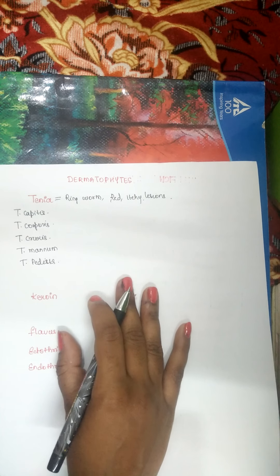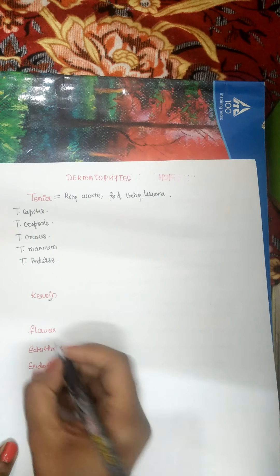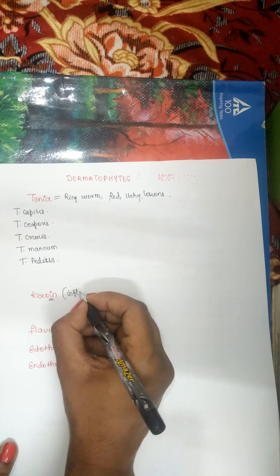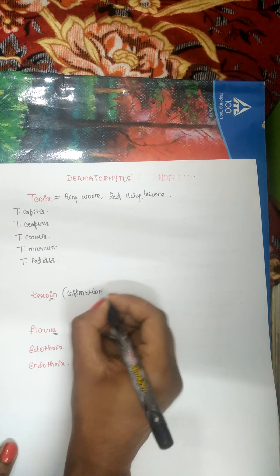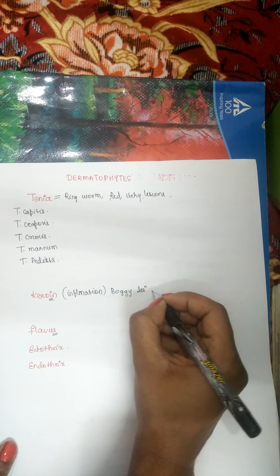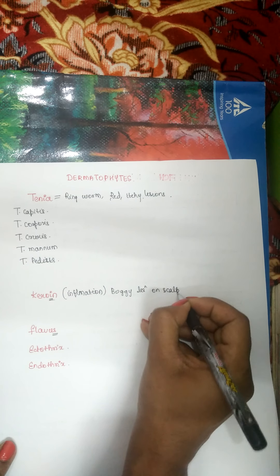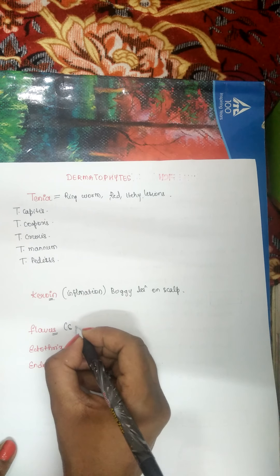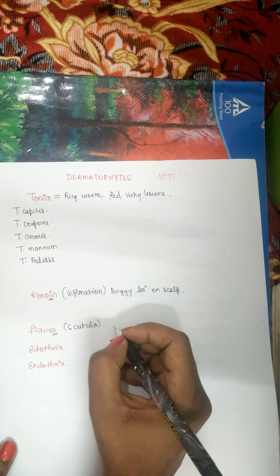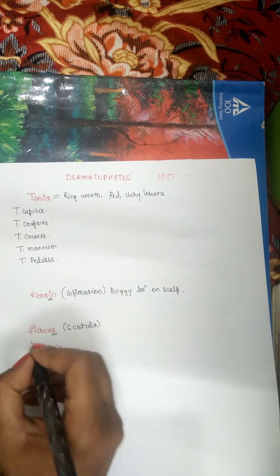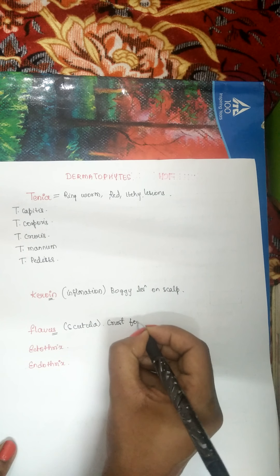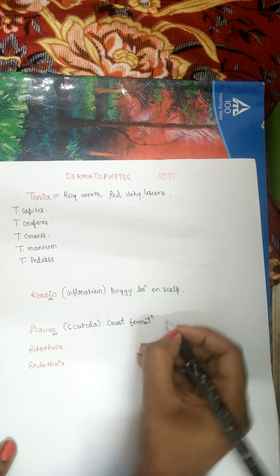Coming to kerion — it involves inflammation and is characterized by a boggy swelling or boggy lesion on the scalp. Coming to favus — it is associated with what is known as scutula, which represents crust formation, also occurring on the scalp.